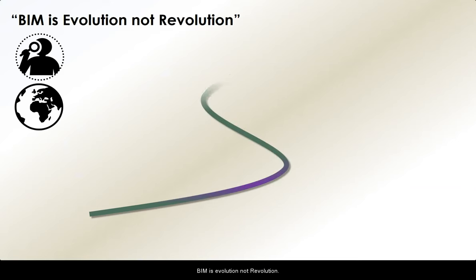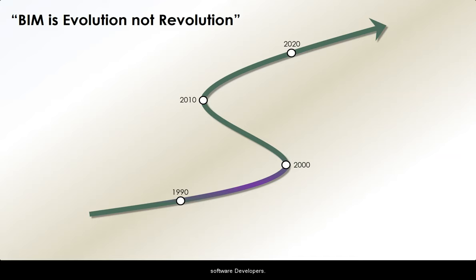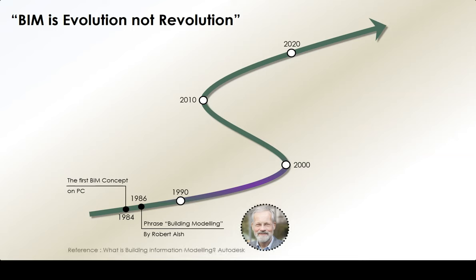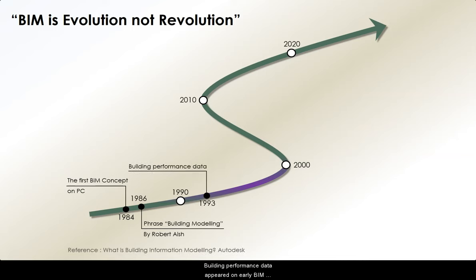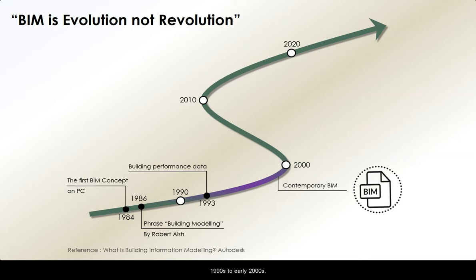BIM is evolution, not revolution. It was developed over many years by various scholars from all over the globe who worked hand-in-hand with software developers. The first BIM concept that appeared on PCs was in 1984. Two years later in 1986, Robert Ash introduced the term 'building modeling' for the first time. Building performance data appeared on early BIM applications in 1993 — the golden years of BIM development were from the late 1990s to early 2000s.